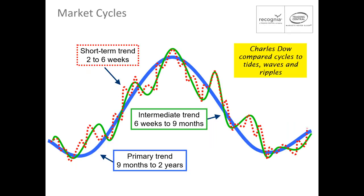Many people are surprised to learn that technical analysis is not a new practice — it dates back more than 300 years to the rice markets of Japan. Modern technical analysis really dates back to Charles Dow, the same Dow from the Dow Jones Industrial Average and the first editor of the Wall Street Journal. Dow watched stock markets in the late 1800s and believed markets tended to move in cycles, which he called the primary trend, the intermediate trend, and the short-term trend.